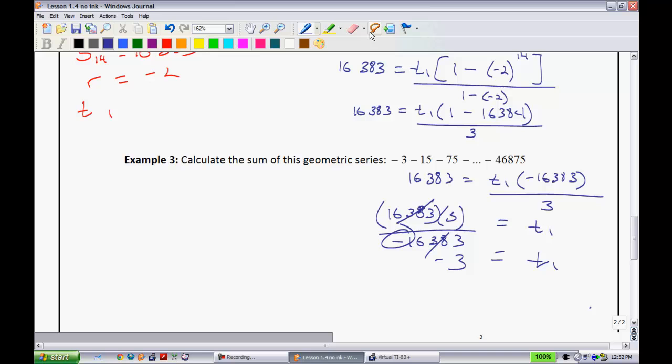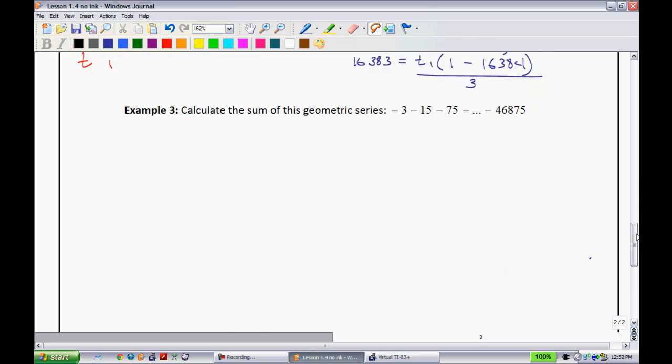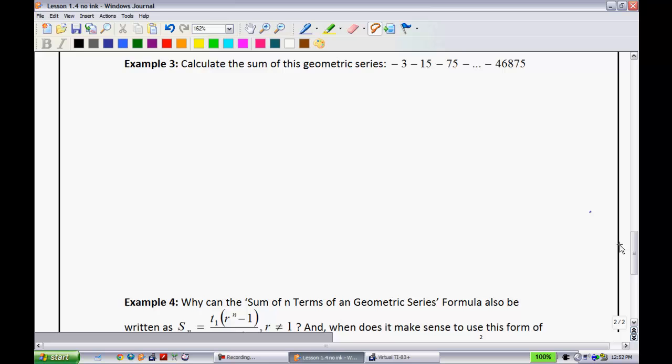All right, now, I'm going to get rid of this just to free up some space down here for our third example. So, let's go and get rid of that. Now, this next one here. It says, calculate the sum of the geometric series, negative three, negative 15, negative 75, negative dot, dot, dot, dot, keeps going on. So obviously, this sum is going to be very negative.